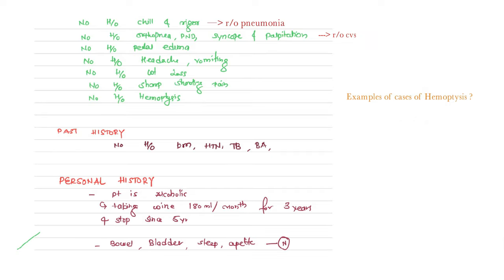Past history: no history of diabetes mellitus, hypertension, tuberculosis, and bronchial asthma. Always say the full form — not just DM, HT, TB. Past history is very important because it provides information about the susceptibility of the patient, the background, and the causation of the disease.